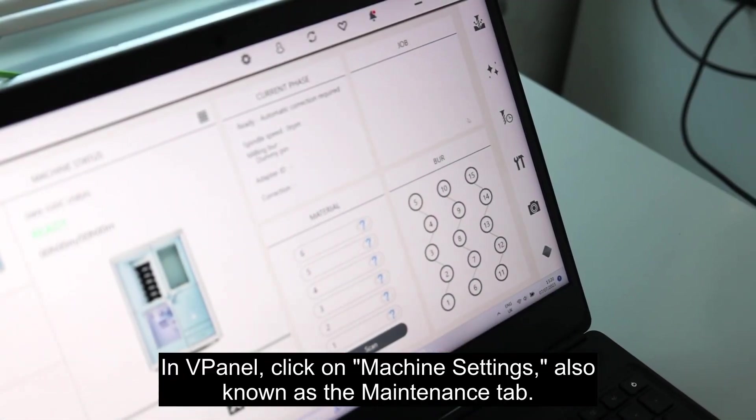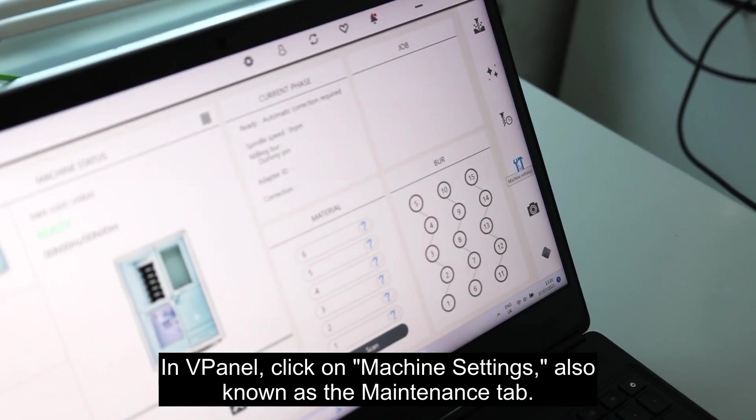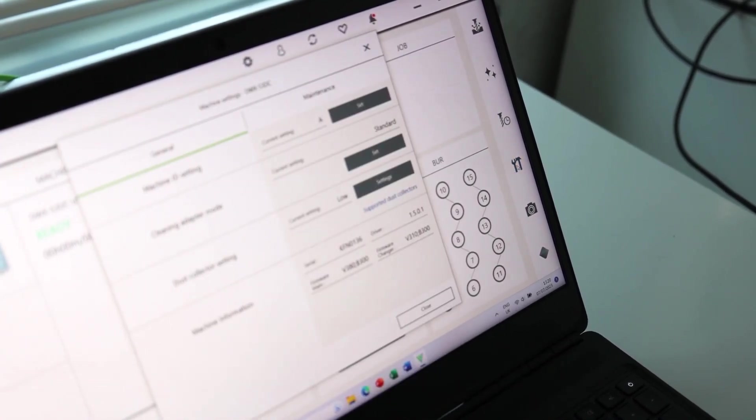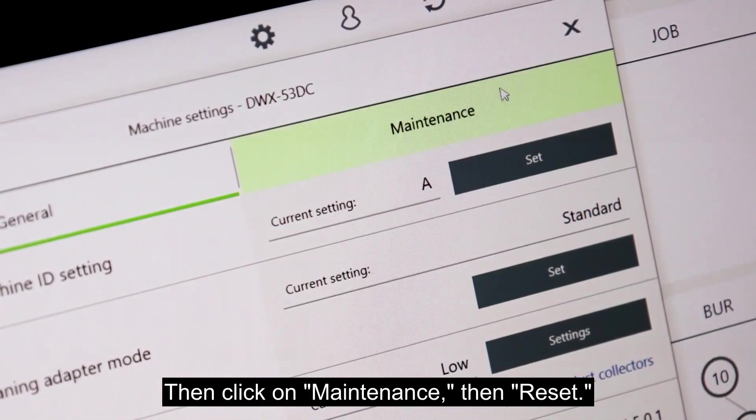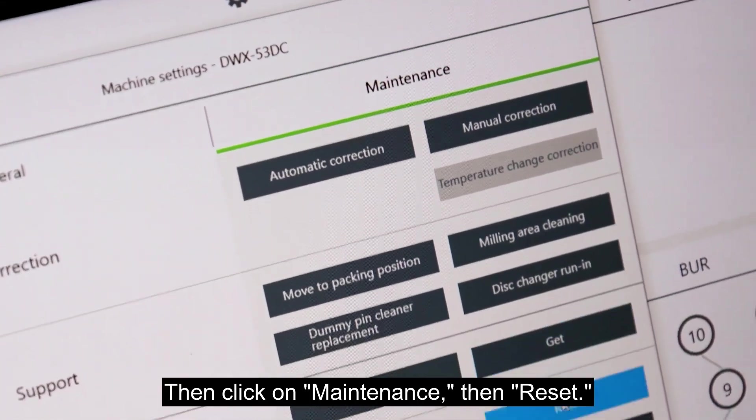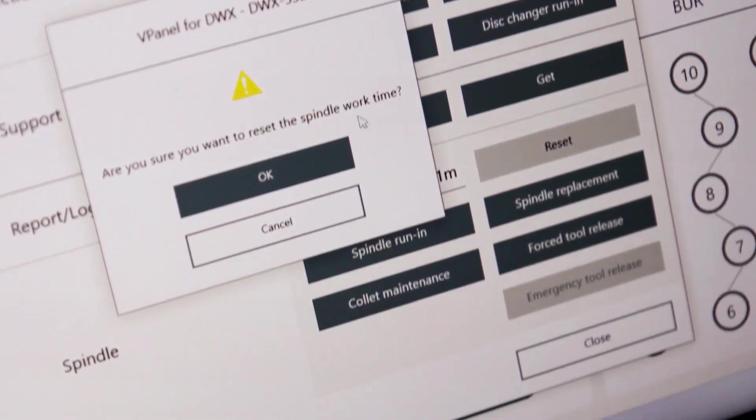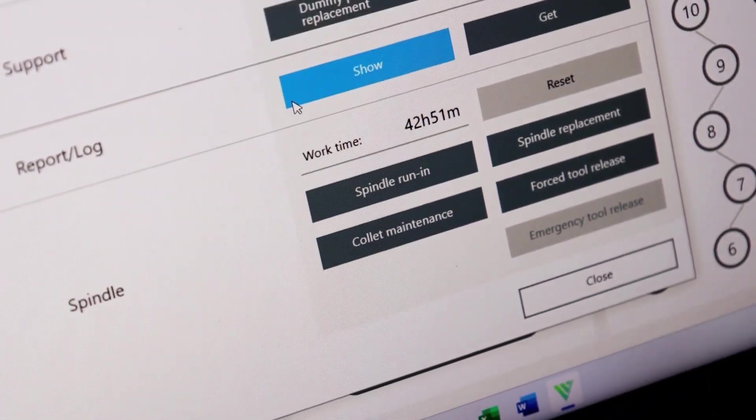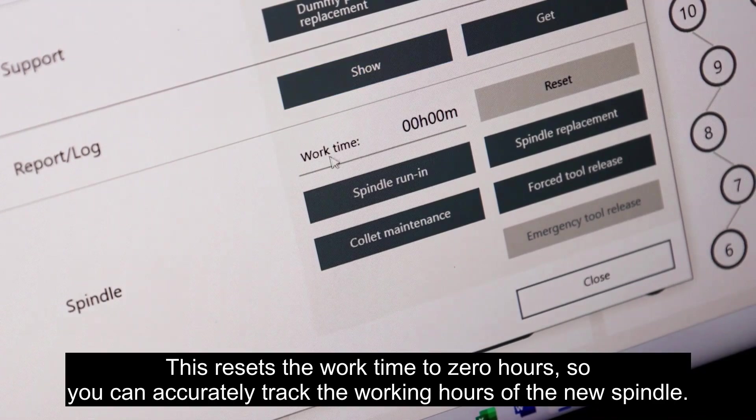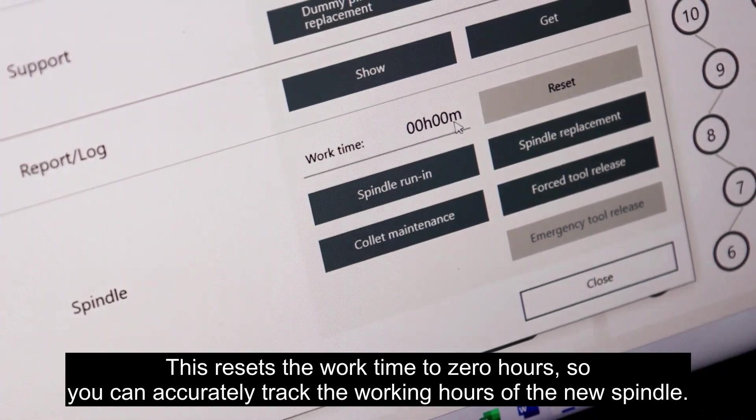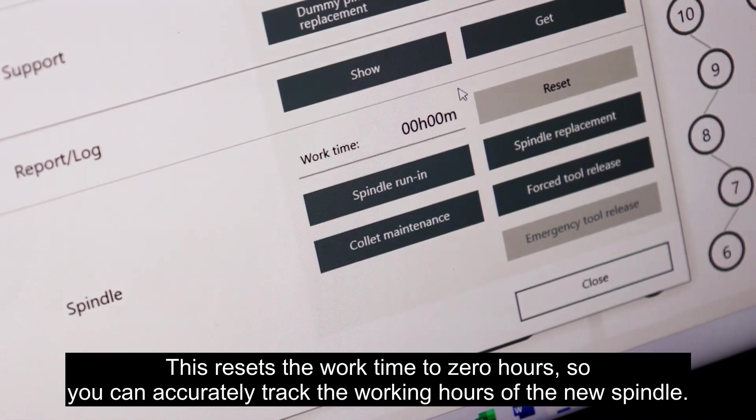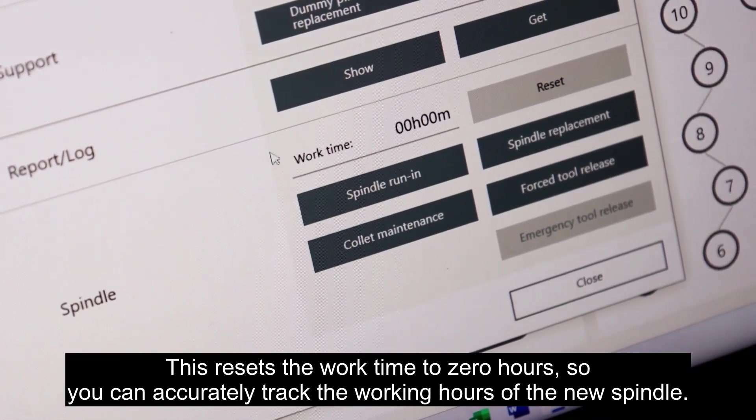In vPanel, click on machine settings, also known as the maintenance tab. Then click on maintenance, then reset, then OK. This resets the work time to 0 hours, so you can accurately track the working hours of the new spindle.